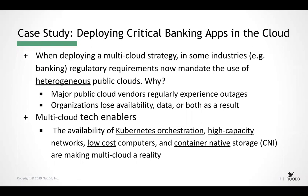We thought it would be a great way to present the topic by talking through a case study. This is a real bank that has implemented a banking application in a multi-cloud environment. When deploying a multi-cloud strategy, what we've come across is that some industries — specifically banking — have regulatory requirements that now mandate the use of heterogeneous or disparate public cloud platforms. Major public cloud vendors regularly experience outages. That might sound surprising, but it is a reality. Some outages may be short, but they do happen regularly — and during these outages, organizations can lose availability, data, or both.